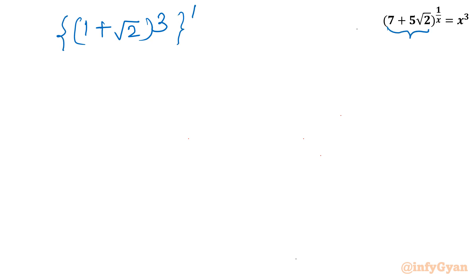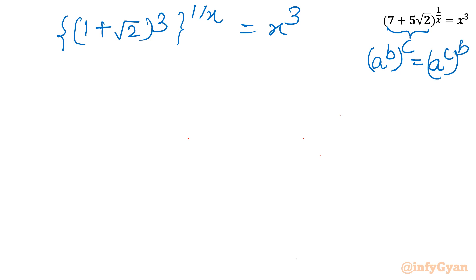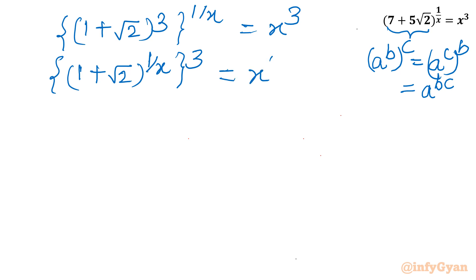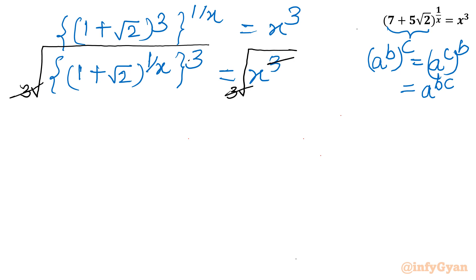Now the equation becomes [(1 + √2)³]^(1/x) = x³. I will use the exponent property that (a^b)^c = (a^c)^b, which can also be written as a^(b×c). So I can rewrite this as [(1 + √2)^(1/x)]³ = x³. Now taking the cube root of both sides, the cube and cube root cancel, leaving: (1 + √2)^(1/x) = x.